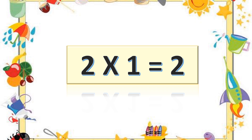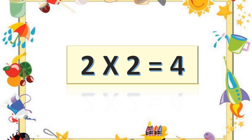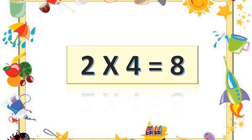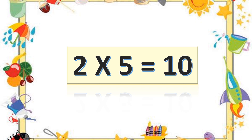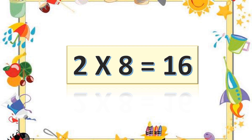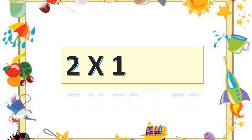Two ones are two. Two twos are four. Two threes are six. Two fours are eight. Two fives are ten. Two sixes are twelve. Two sevens are fourteen. Two eights are sixteen. Two nines are eighteen. Two tens are twenty.